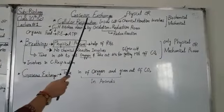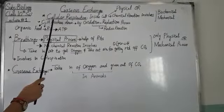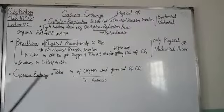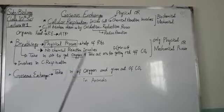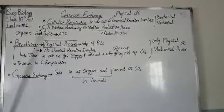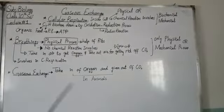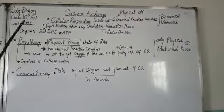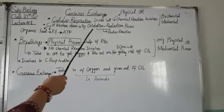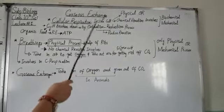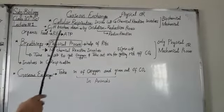First, in the introduction of gaseous exchange, we will discuss the term cellular respiration. What is cellular respiration? Cellular respiration is a process in which carbon-hydrogen bonds are broken down by an oxidation-reduction process, and energy is released in the form of ATP.